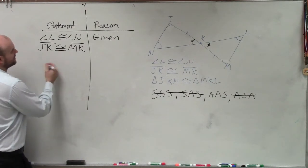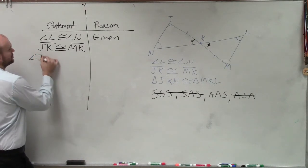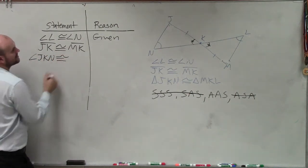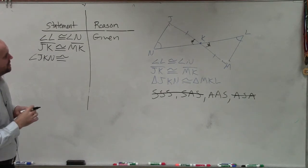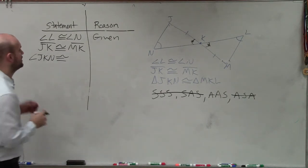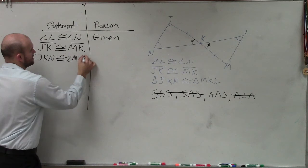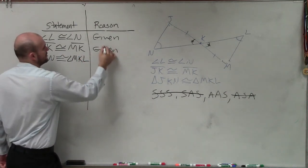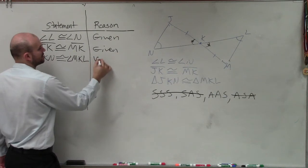So the only thing we can say now is angle JKN is congruent to angle MKL. That is going to be vertical angles.